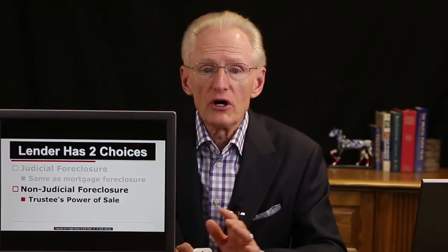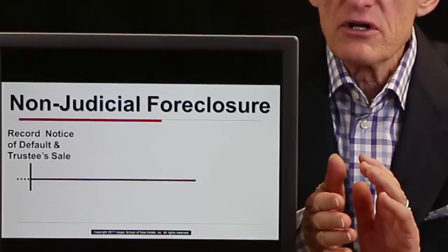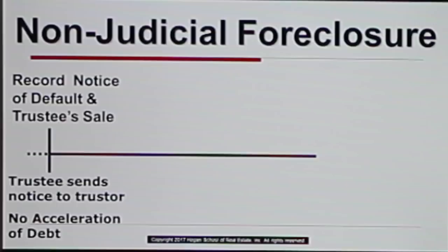In a non-judicial foreclosure under the trustee's power of sale: first, the beneficiary instructs the trustee to begin the foreclosure. The trustee then records a notice of default and trustee's sale — that's the actual name of the document. Unlike judicial foreclosure, there's no court action; the trustee fills out a form and records it at the county recorder's office. The trustee must also send notice to the trustor by certified return receipt within five days.